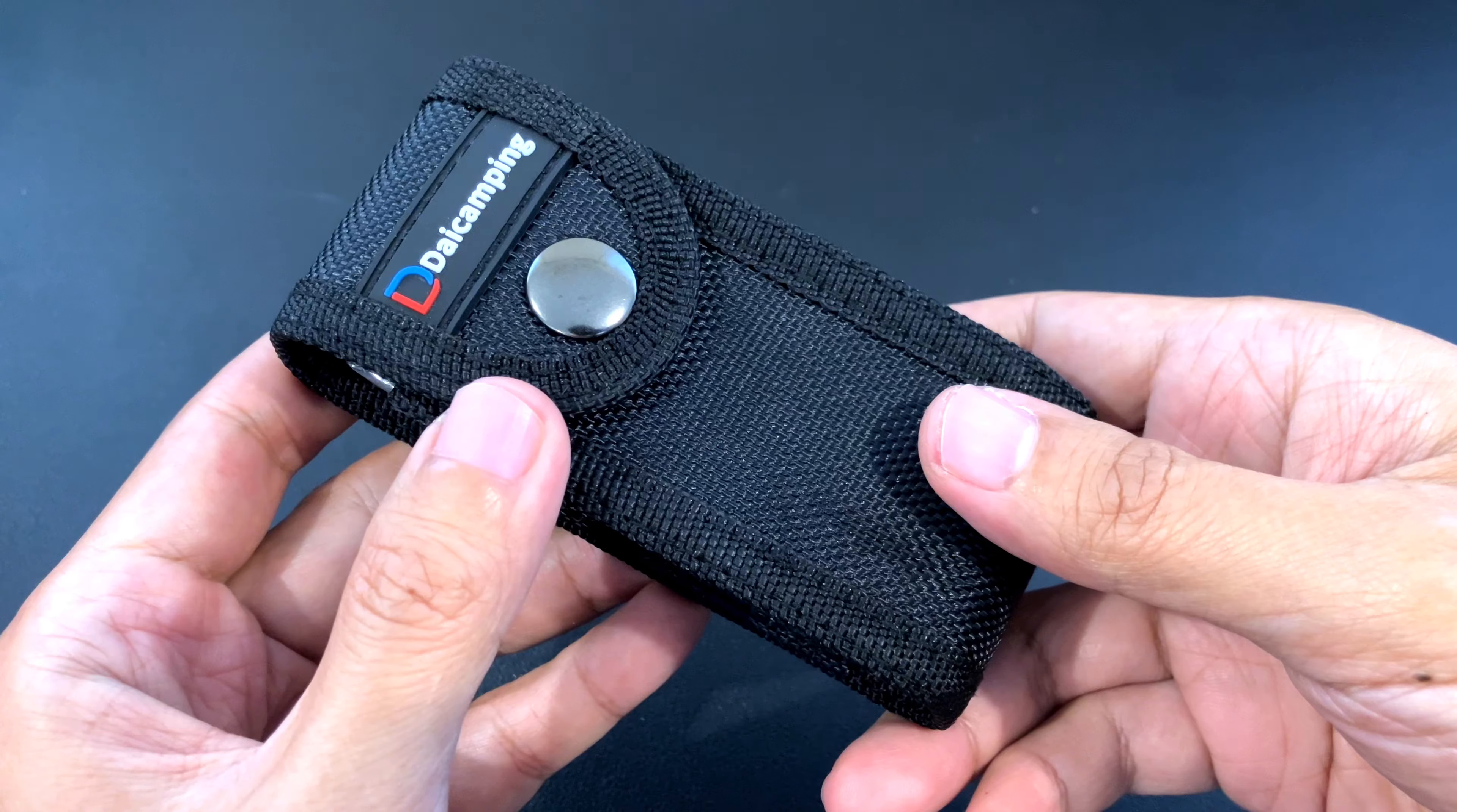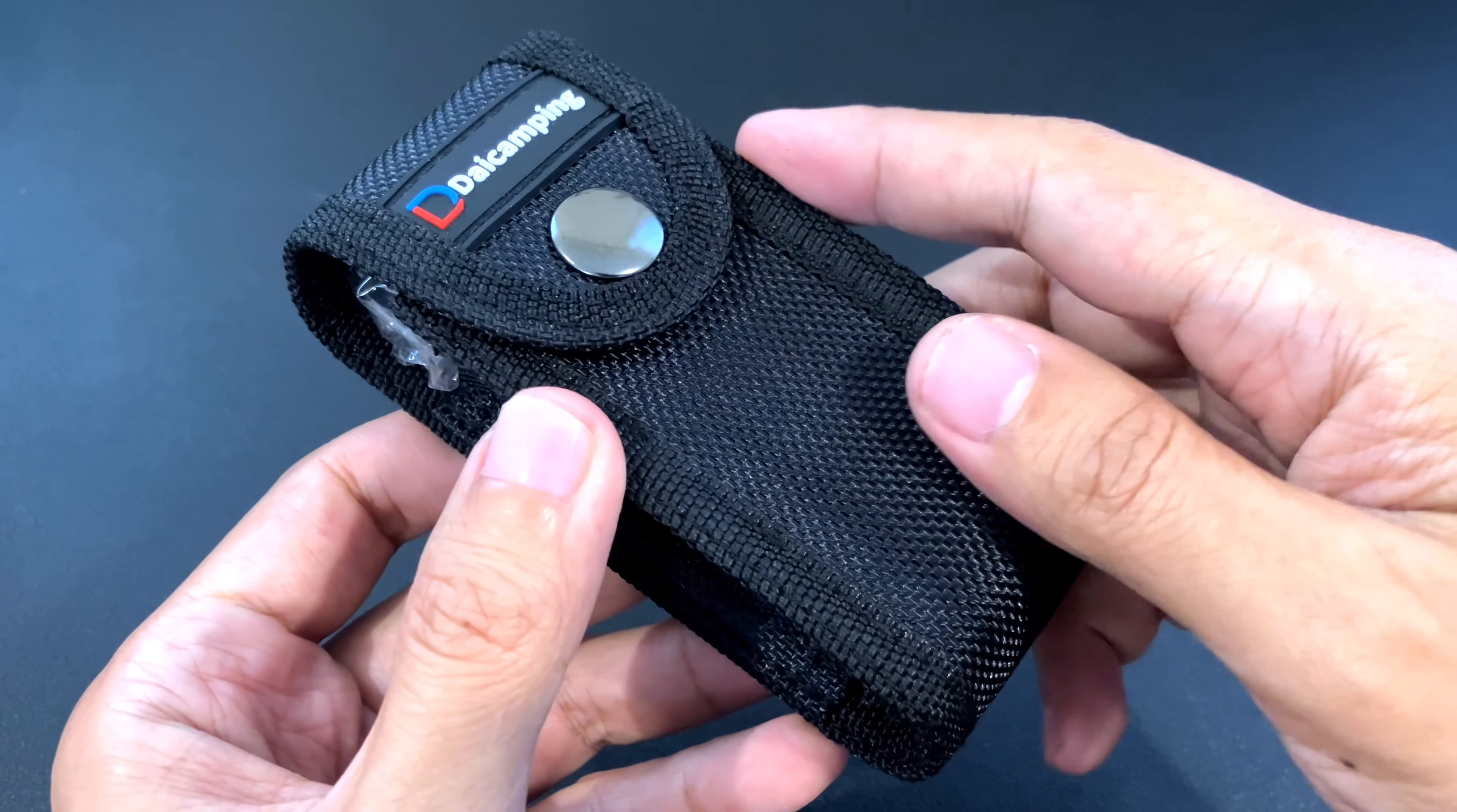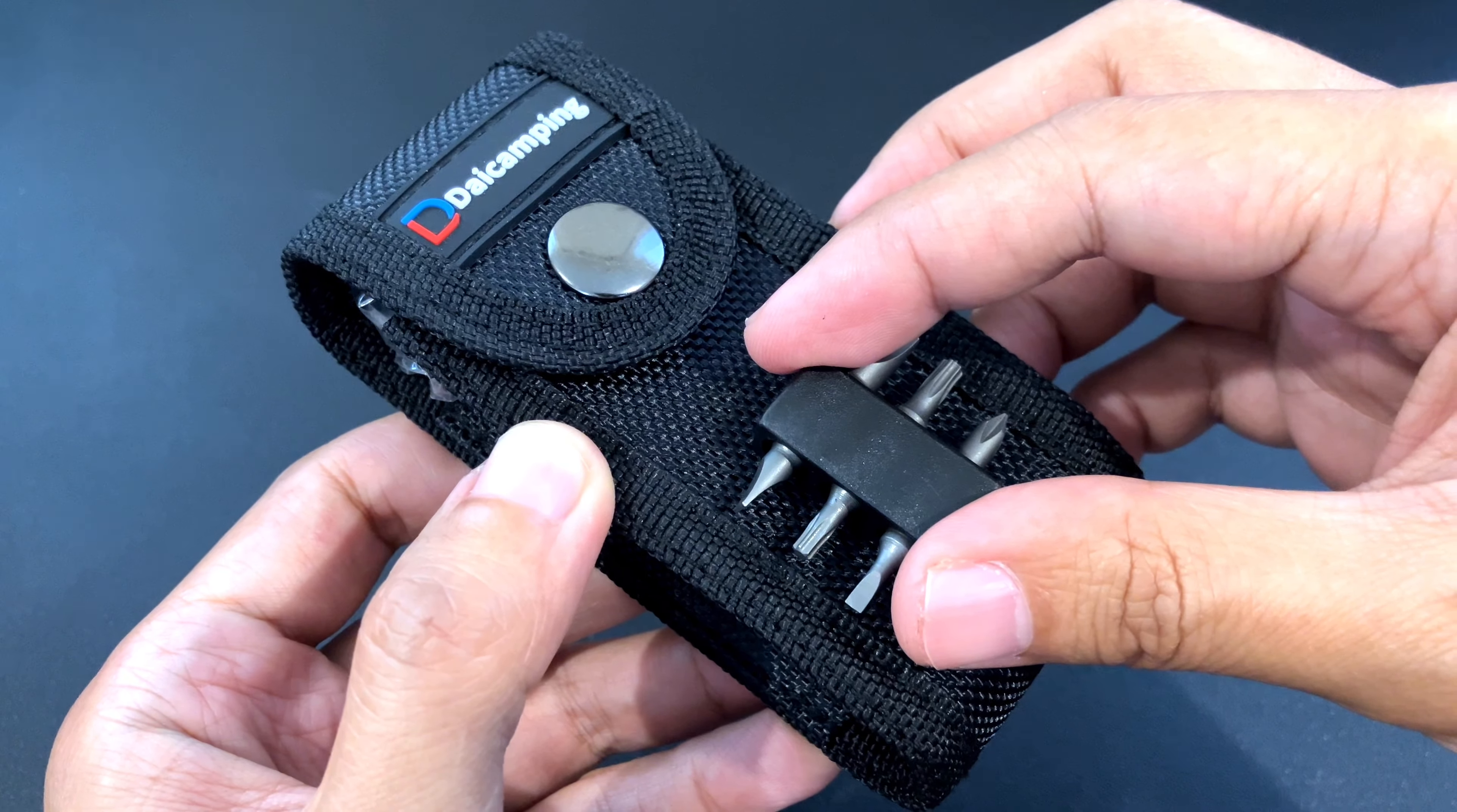The tool comes in this sheath and it's pretty good I guess. It's got a belt loop and a snap closure. What it doesn't have is a pocket where you can put the extra bits in. In the Shell 18-in-1 Multi-Tool there's a pocket here so that's where you usually slip the extra bits in. We don't have that here.